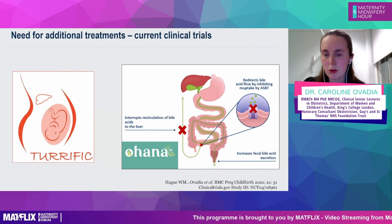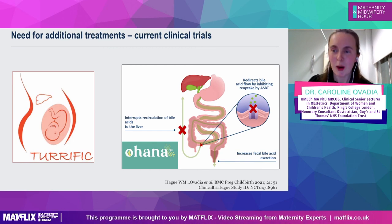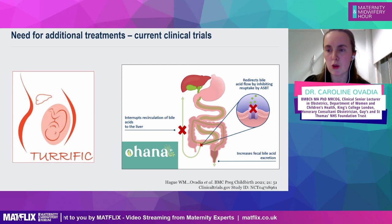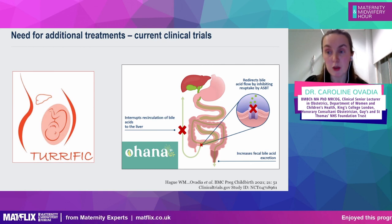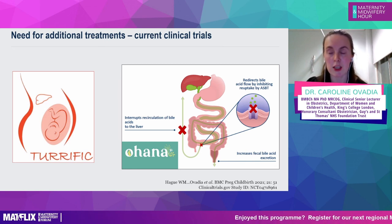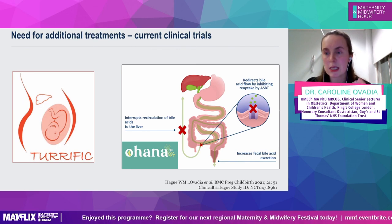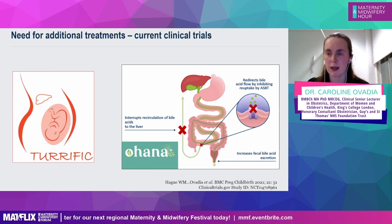We need more treatment options, and there are two clinical trials I'm thrilled about. One is run from Australia by Bill Haig — the TERRIFIC trial, recruiting UK centres imminently — comparing urso with rifampicin. The other is the OHANA study, funded by a pharmaceutical company, looking at blocking the intestinal bile acid transporter (IBAT). This medicine stays in the gut, isn't absorbed, doesn't cross the placenta, but blocks bile acid absorption. It's recruiting in the UK, America, and New Zealand.